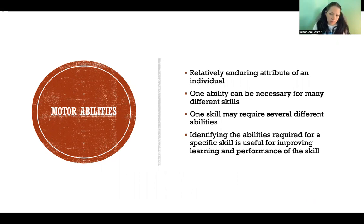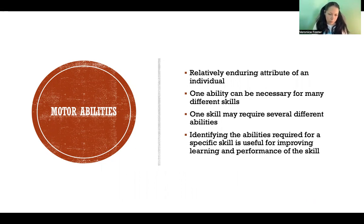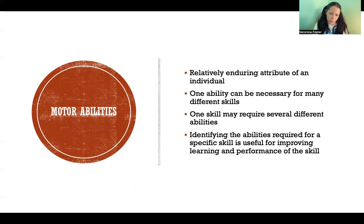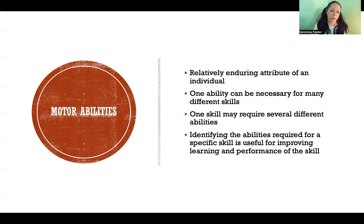One ability can be necessary for many different skills. Static balance, for example, is a motor ability that will serve us well in all sorts of different skills. One skill may require many different motor abilities — think of a tennis serve. There is a lot involved in executing a good tennis serve, and many different motor abilities factor in and are required.